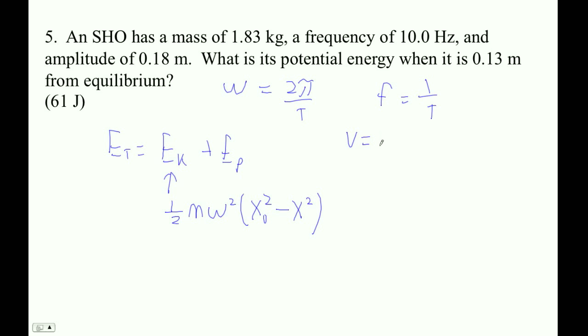Velocity is plus or minus ω times the square root of x naught squared minus x squared. So if you square this thing, you get ω² times this. Okay, so yeah, let's see.